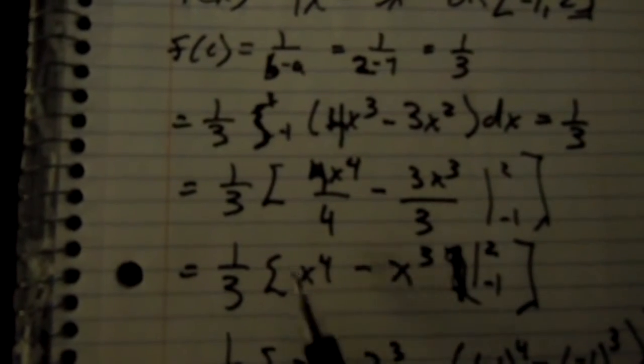And you can just simplify these. 4 divided by 4 is 1, 3 divided by 3 is 1. So it's just going to be x to the 4th minus x to the 3rd.